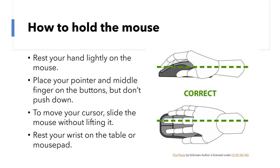First, just briefly, let's go over the best way to hold a mouse. You don't want to grip your mouse very tightly or press down very hard — you want to rest your hand lightly over the mouse. You want your pointer finger over that left-hand button, your middle finger over that right-hand button, and then your thumb and other fingers just along the side. You can rest your wrist on the table or on the mouse pad. Just move your mouse very gently around — think about it like you're holding a hard-boiled egg on the table. You don't have to be super gentle, but you don't want to press down really hard, because that would start pushing buttons.